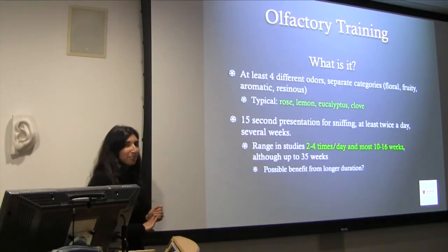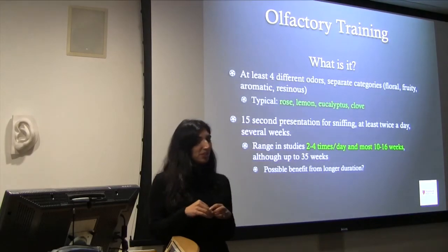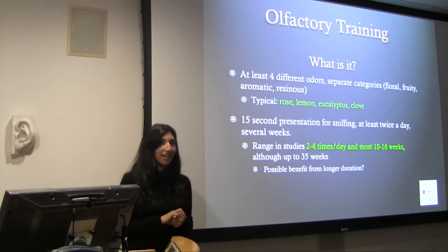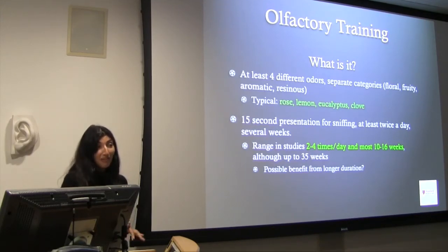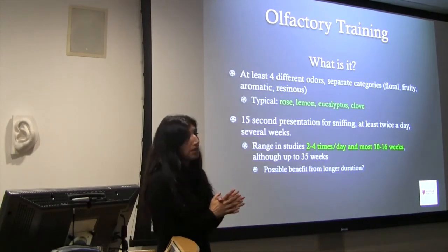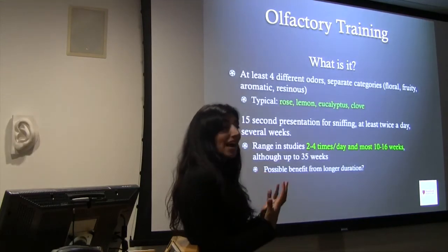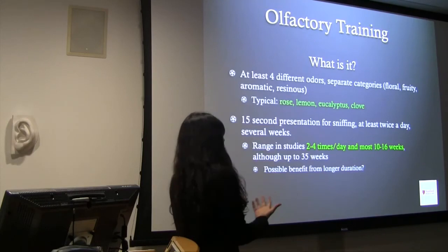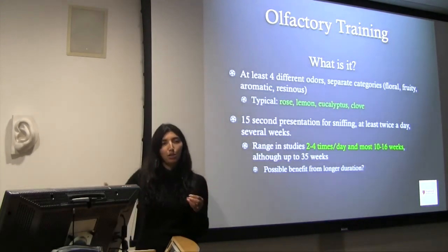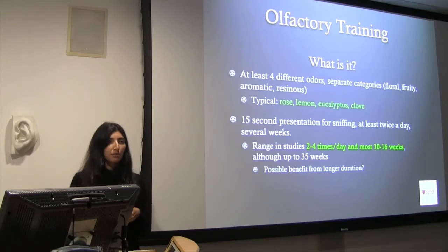Olfactory training is actually the thing with the highest level of evidence we have to offer patients with olfactory loss right now. It's very simple — just a structured smelling protocol. You start with at least four different odors: rose, lemon, eucalyptus, and clove, because they activate different categories of olfactory receptor neurons. Patients just smell each for 15 seconds and rotate through, doing it twice a day. I have my patients do this for six months, because as more studies come out with longer durations of olfactory training, every time you extend it a higher percentage of patients will improve.